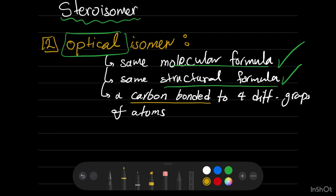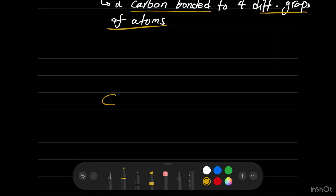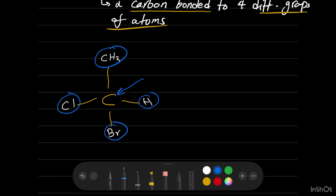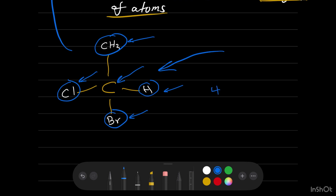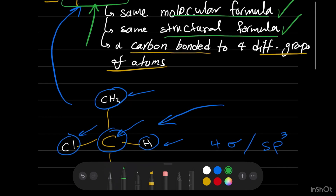The key feature of optical isomers is a carbon bonded to four different groups. For example, consider a carbon in tetrahedral form bonded to CH3, H, Br, and Cl. This carbon is surrounded by four different groups: a methyl group, hydrogen, bromine, and chlorine. This carbon makes four sigma bonds, meaning its hybridization is sp3. In other words, we never find an optical isomer at a double bond — it is always a single bond.